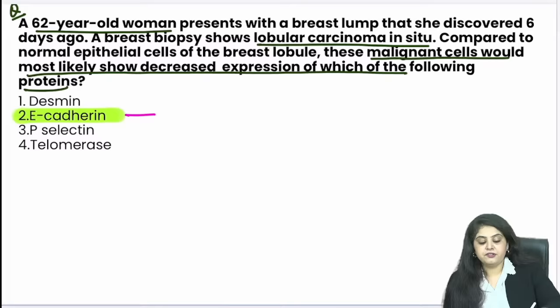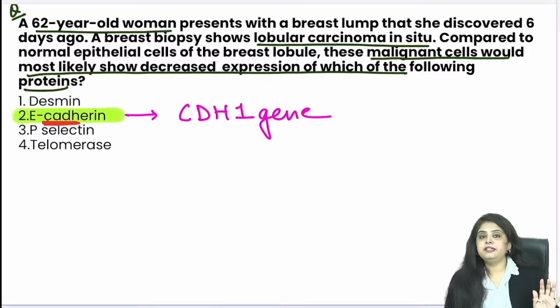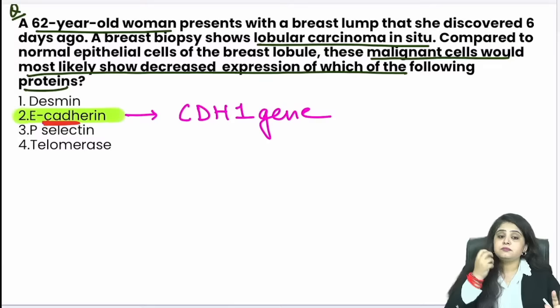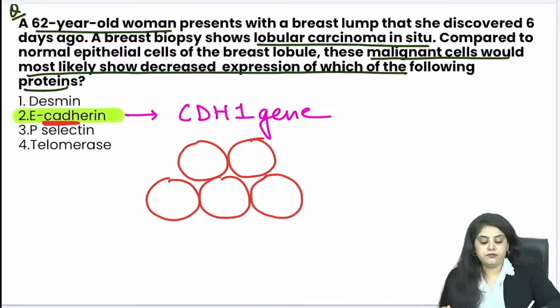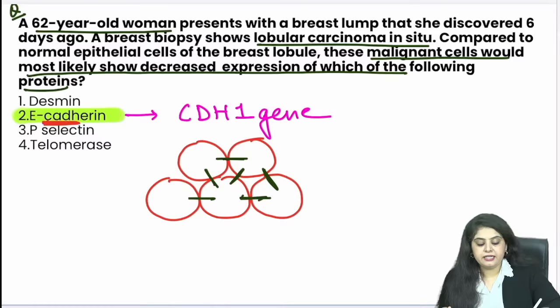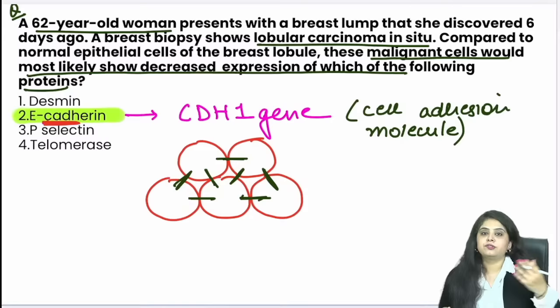E-cadherin: take C, D, H from the word → it is the CDH1 gene. In normal cells, E-cadherin is like Fevicol — a glue. It keeps cells together. It is a cell adhesion molecule. Books call it a cell adhesion molecule; I call it glue. It is very simple: E-cadherin keeps cells stuck to each other.